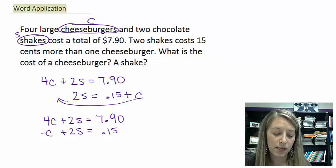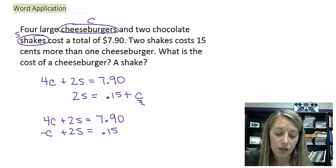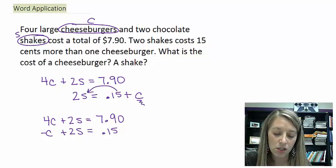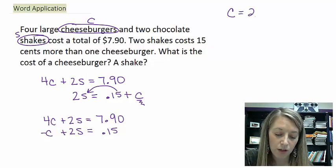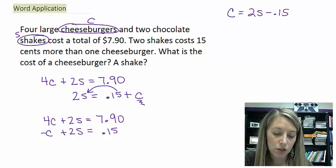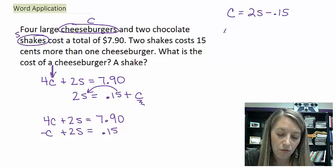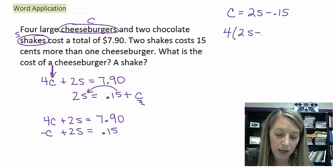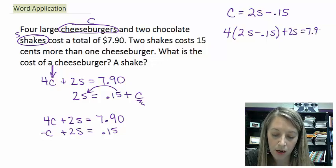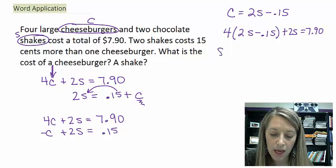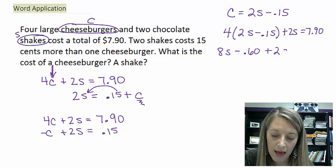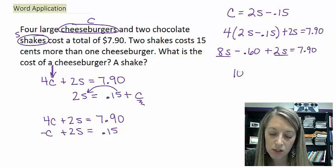I'm going to solve this by substitution. The easiest thing to solve for is C, so I'll move $0.15 to the other side: the cheeseburger equals two shakes minus $0.15. Plugging that into the first equation: 4 times (2S − 0.15) plus 2S equals 7.90. Distributing the 4 gives 8S − $0.60 plus 2S equals $7.90. Combining the shake terms gives 10 shakes.